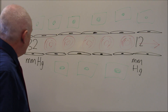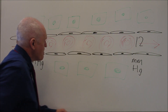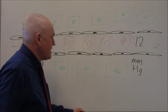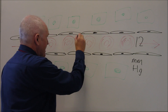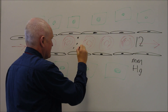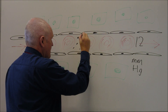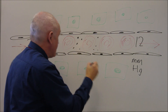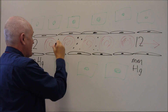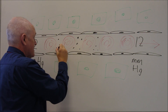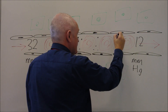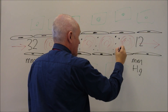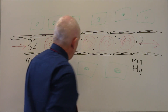In the blood we have red cells and we also have plasma proteins. The most ubiquitous, most common plasma protein is albumin — a very large molecule.